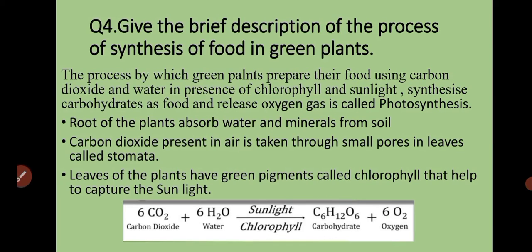Question number four: give a brief description of the process of synthesis of food in green plants. Green plants make their own food. The process by which green plants prepare their food using carbon dioxide and water, in the presence of chlorophyll and sunlight, to synthesize carbohydrates as food and release oxygen gas, is called photosynthesis.